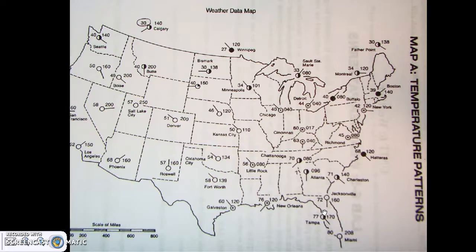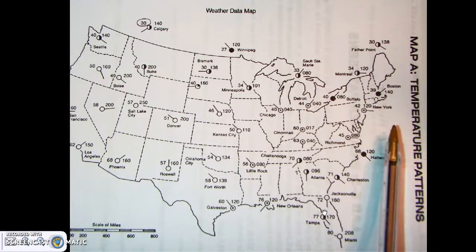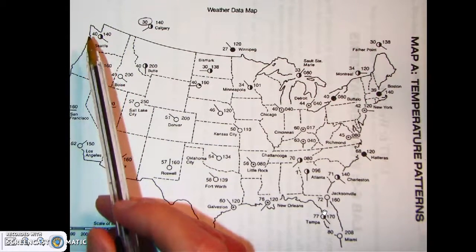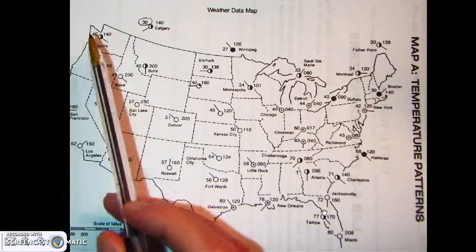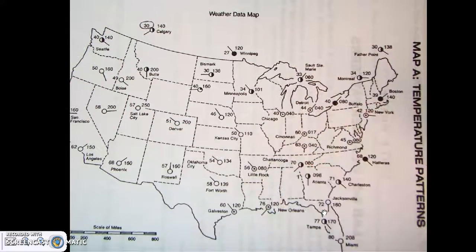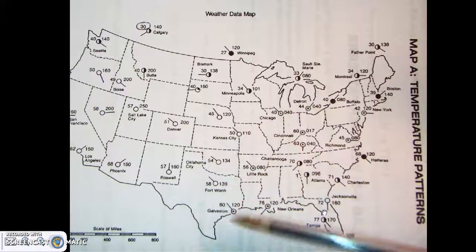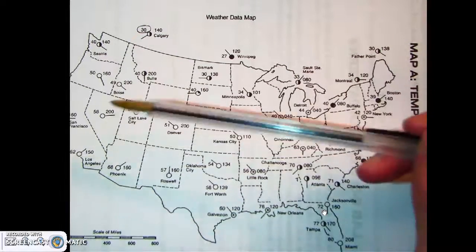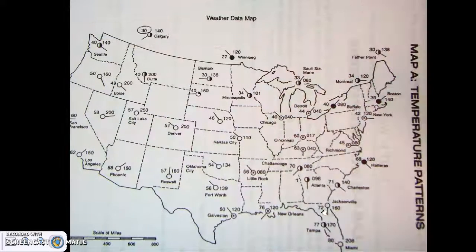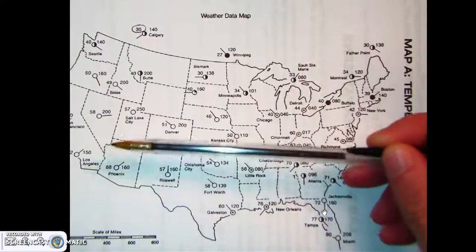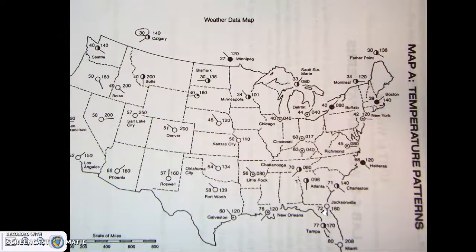For Map A, this is your temperature pattern map. On the station model we have air temperature in the upper left; the right side is air pressure, but we're looking at the numbers on the left side. The pattern should be roughly parallel lines — remember that temperature is a function of latitude. It's certainly warmer in Texas and Florida than in Maine, so as we go further north in latitude we should see a decrease in temperature.